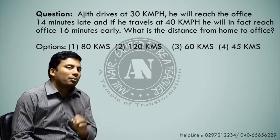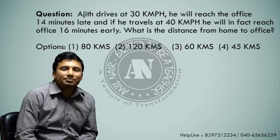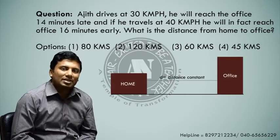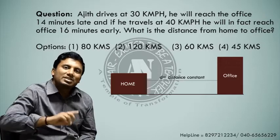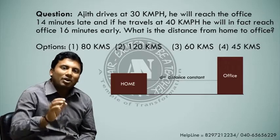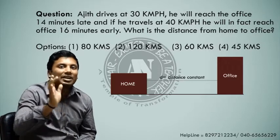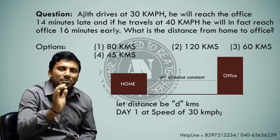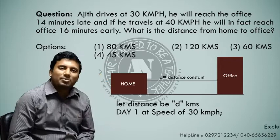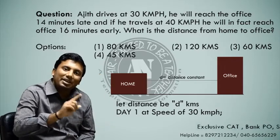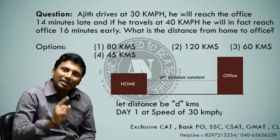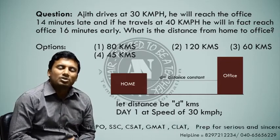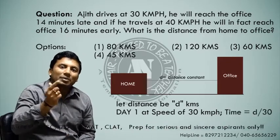Let us see the traditional approach to solve this question. A person is travelling from home to office — distance is constant. Let me call the distance as d kilometers. On day 1, he travels at a speed of 30 kmph. Speed is 30 kmph, distance is d kilometers, so time will be d/30.